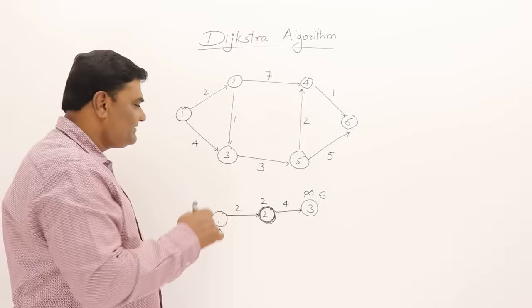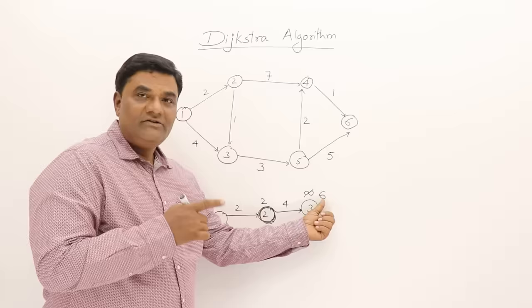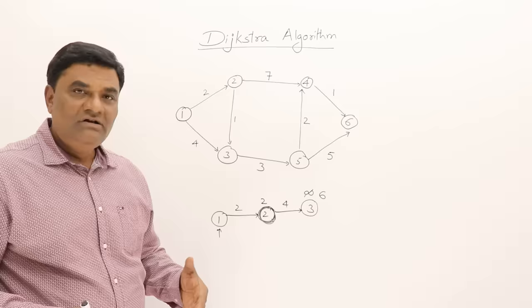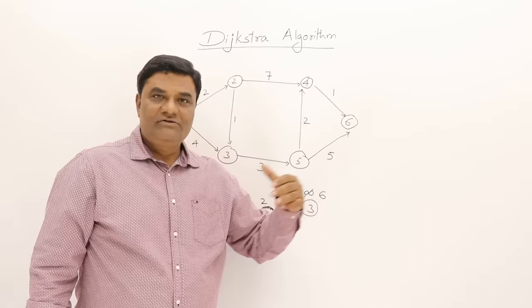This means there is a shortest path from vertex 1 to vertex 3 of distance 6. It's not a direct path — it comes via 2 — but there is a path. That's how Dijkstra's algorithm always selects a vertex with the shortest path, then updates the shortest path to other vertices if possible.